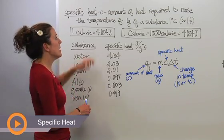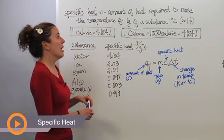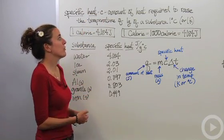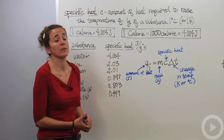So let's talk about specific heat. Specific heat we're going to note with the letter C. It's the amount of heat required to raise the temperature of one gram of a substance one degree Celsius or one Kelvin.